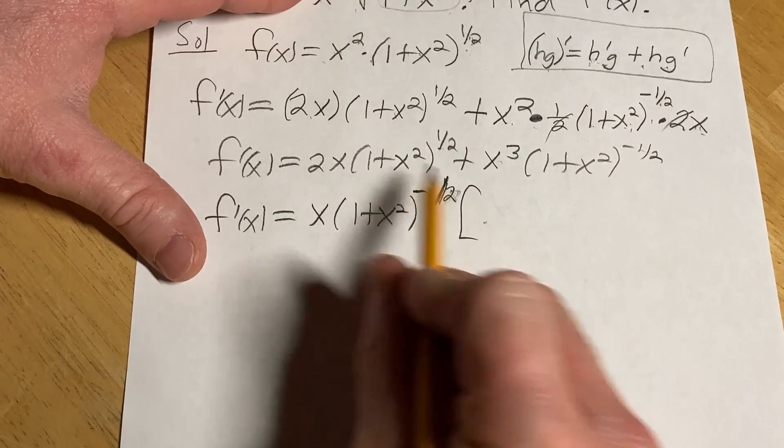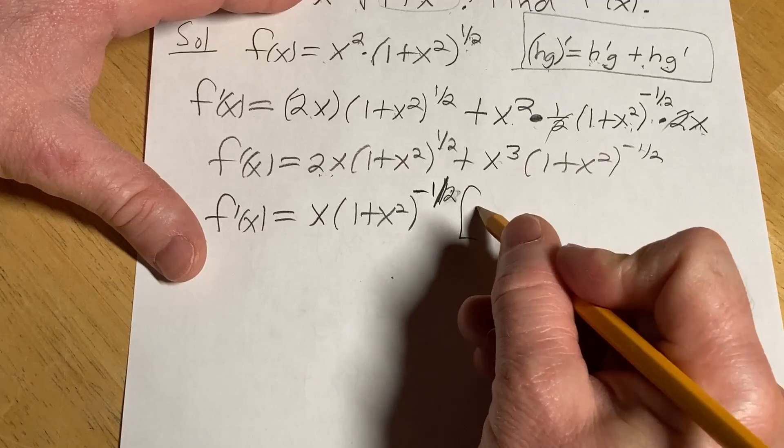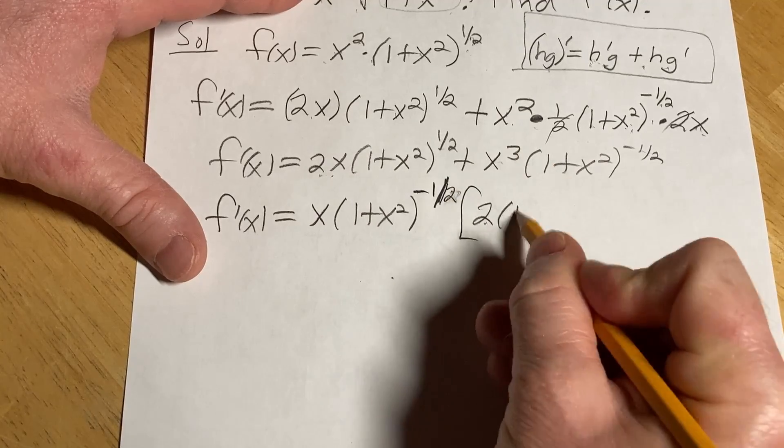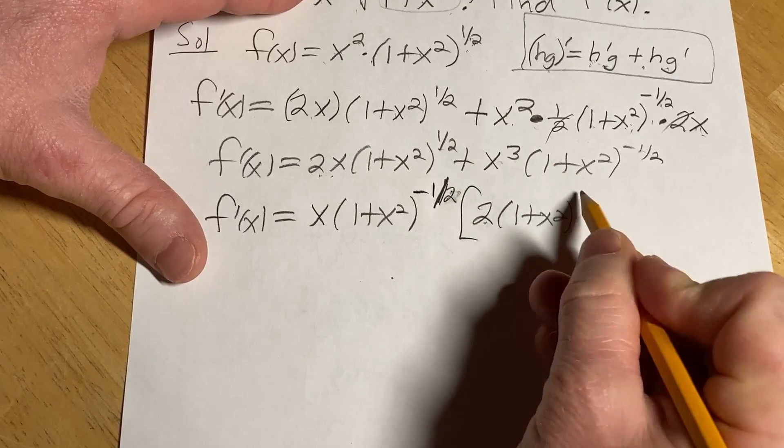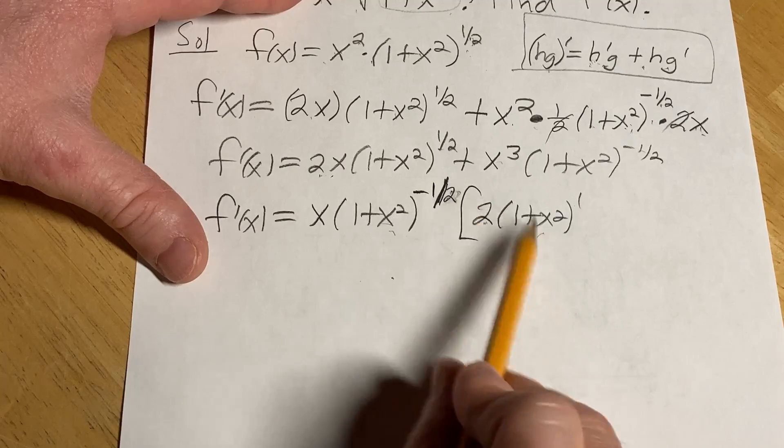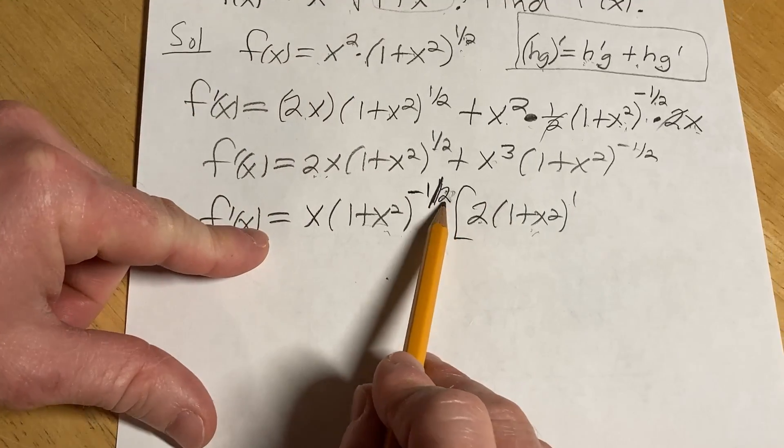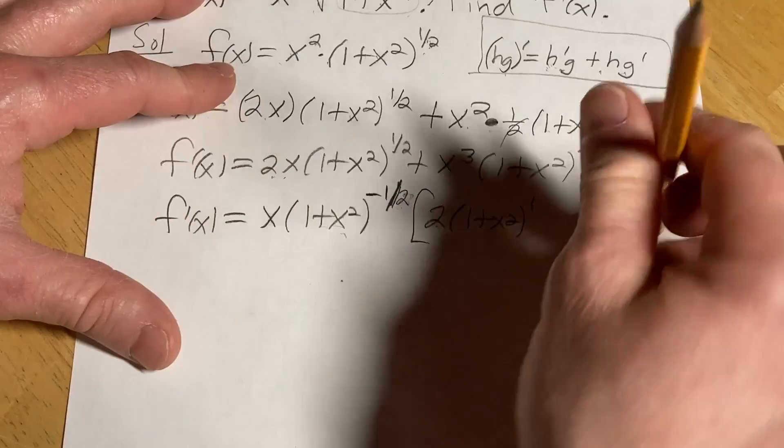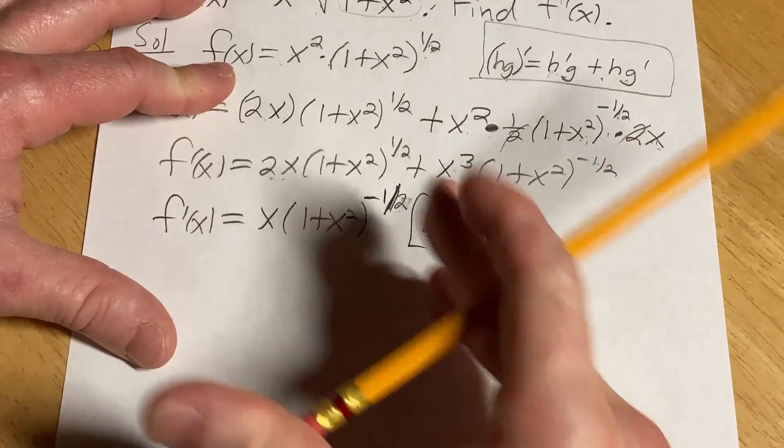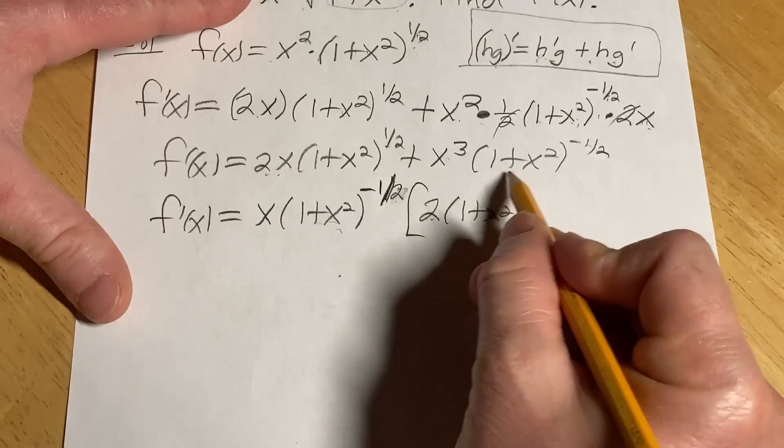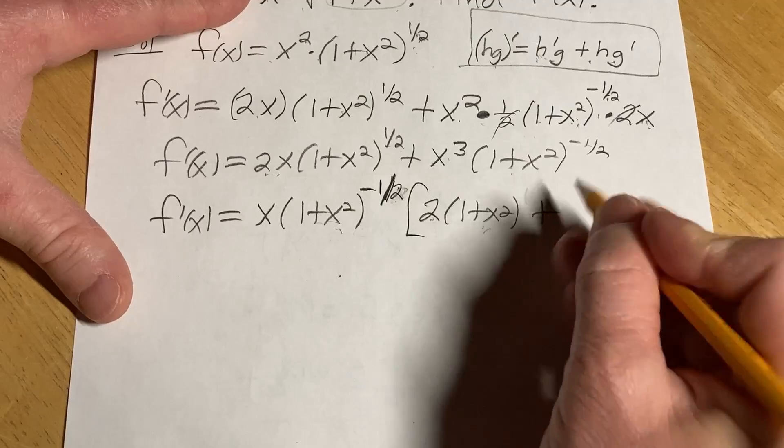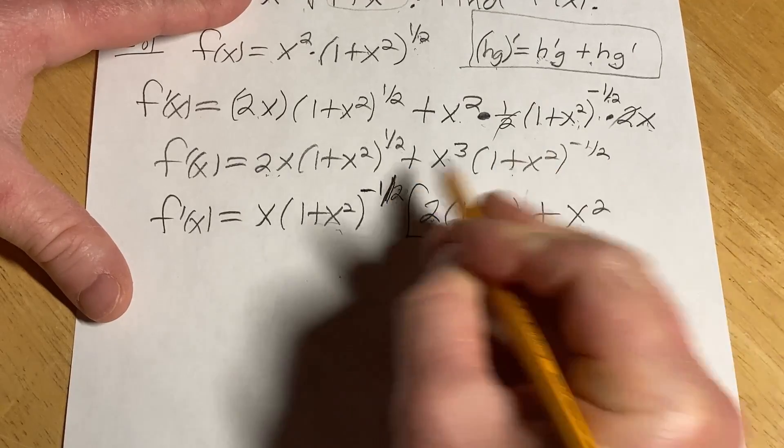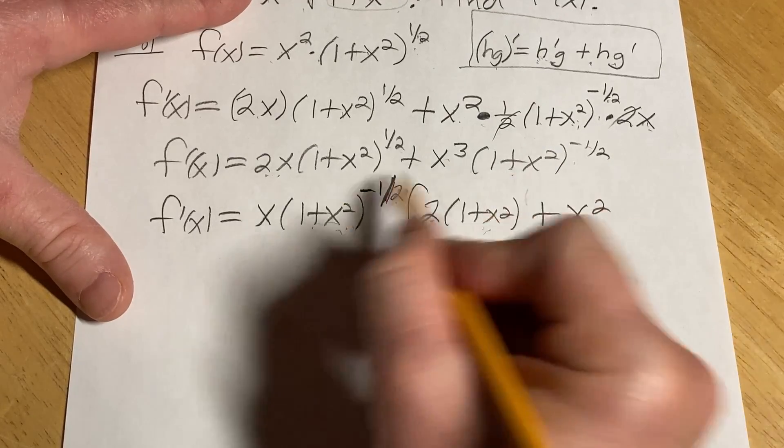So now you say, what's missing here to get this? Well, we're missing a 2. And we're also missing 1 plus x squared to the first power. Because when you multiply these, you add the exponents, right? Negative 1 half plus 1 is 1 half. So something to think about. I'm going to erase the 1, but it's really there, right? It's really actually there. What's missing here? Well, looks like you're just missing an x squared, right? Because you've already got the 1 plus x squared to the negative 1 half. So boom.